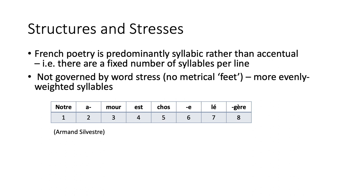If we just take this line from Armand Silvestre's poem — 'Notre amour est choses légères,' which you might know in the Fauré setting — we can just count that as eight syllables. When we speak the line, we don't try to put any emphasis anywhere in particular: just 'Notre amour est choses légères.' We're not trying to go 'Notre amour est choses légères' with extra emphasis. Just much more evenly weighted.